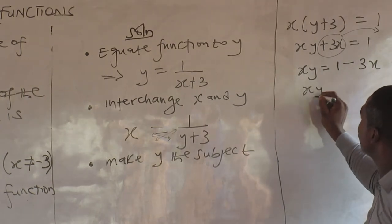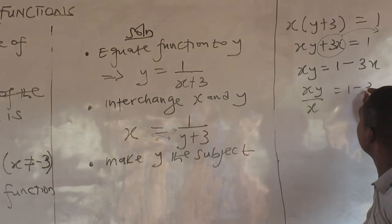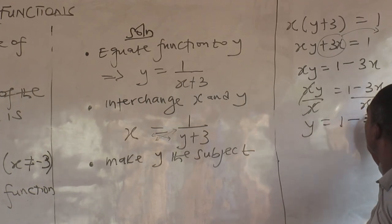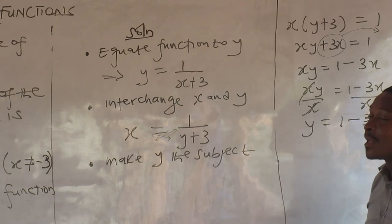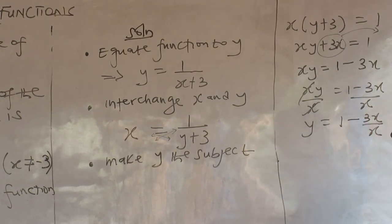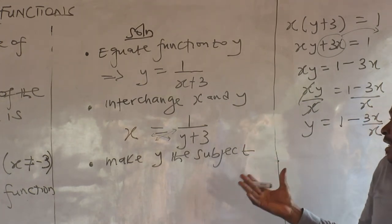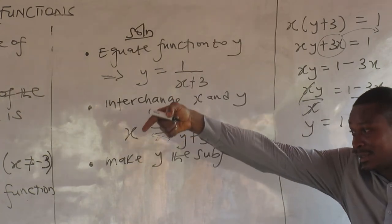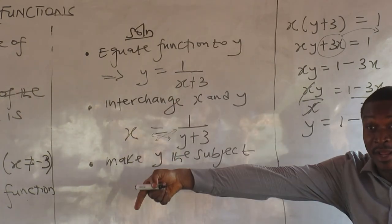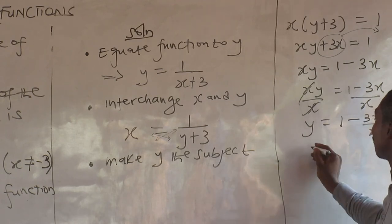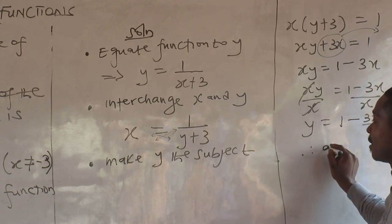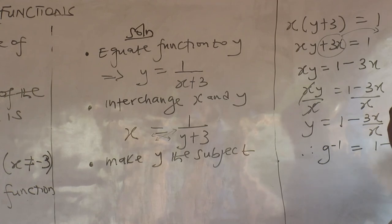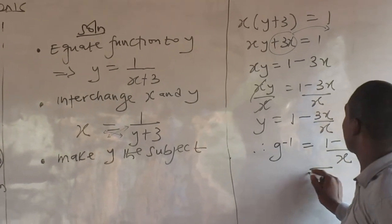I want to make y the subject, so I throw the three x over: xy equals one minus three x. Then divide both sides by x: y equals one minus three x all over x. After interchanging and solving, j inverse becomes this — that is the answer.